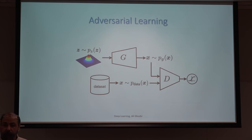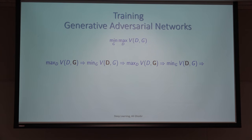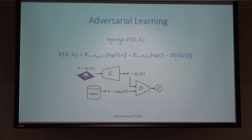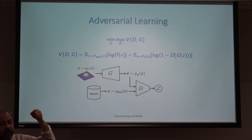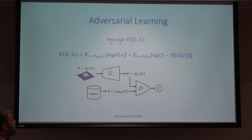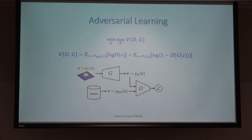The objective function is a min-max problem. We have two components: discriminator D and generator G. Given a fixed generator, we want to maximize this objective with respect to D. Given a fixed discriminator, we want to minimize this objective with respect to G — tweaking the weights of the generator so the objective is lower.